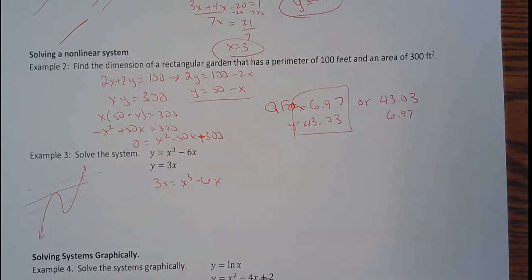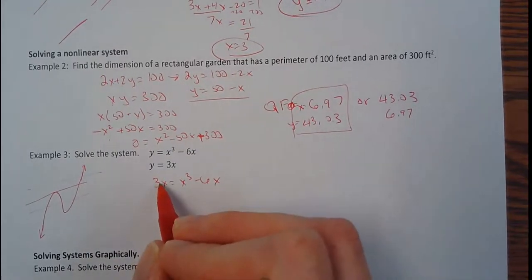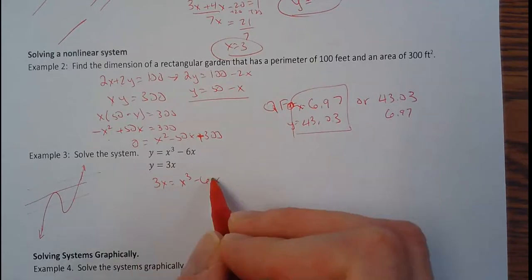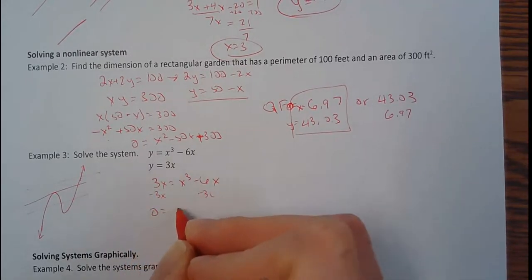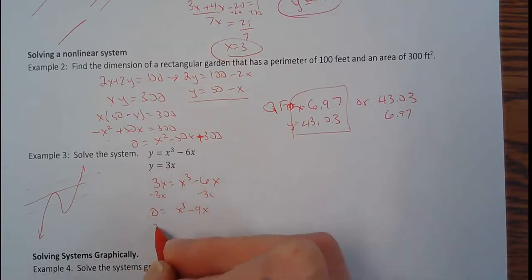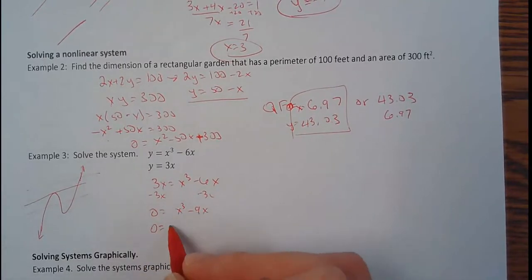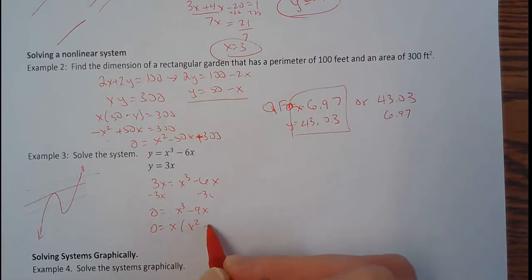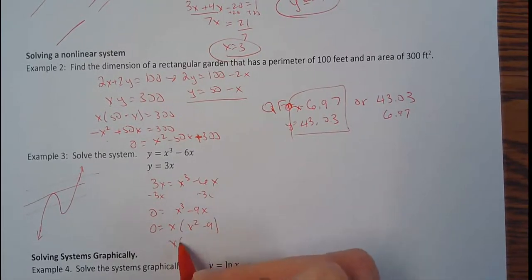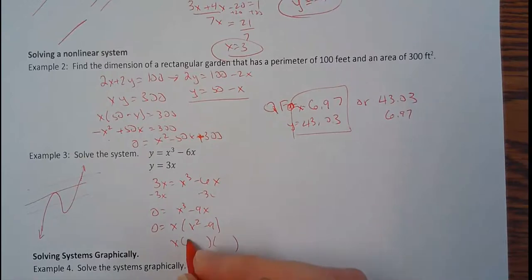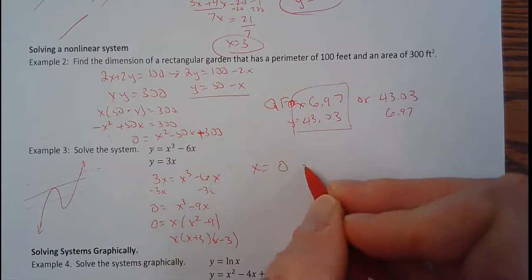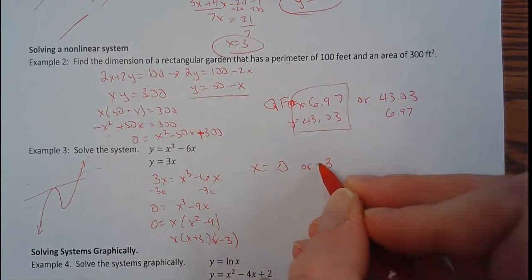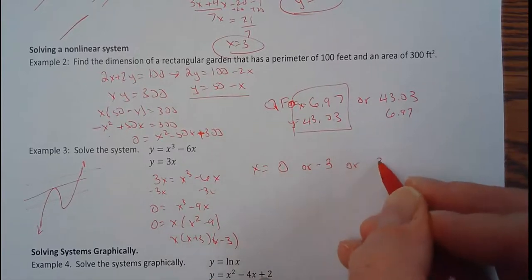If they both equal y, let's set them equal to each other. So we both equal y. I'm going to bring this over here, so I'm going to subtract 3x. So zero equals x cubed minus 9x. Do some factoring. I could take an x out of both of those. x squared minus 9, difference of two squares. So x plus 3, x minus 3. So that means my x equals 0 or negative 3 or positive 3.